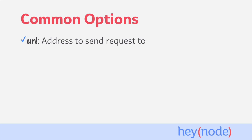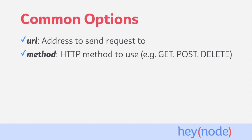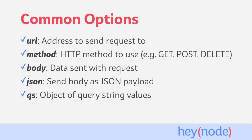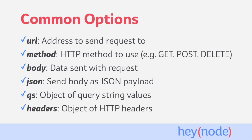We'll go over some of the most common fields here. First is the URL field — the address that you're going to send the request to. The method field allows you to specify the HTTP verb used when making the request. There's a body field where you put the data that you send with the request. The JSON field accepts a Boolean — true or false, with false being the default. If you use JSON true, the outgoing body field will be parsed to a JSON payload, and the incoming response body will also be parsed from JSON into a JavaScript object. The QS field accepts an object where keys are query string names and values are the query string values. The headers field accepts an object to add HTTP headers to the request, with the key being the header name and the value being the header value.